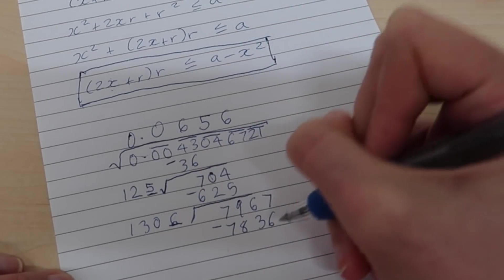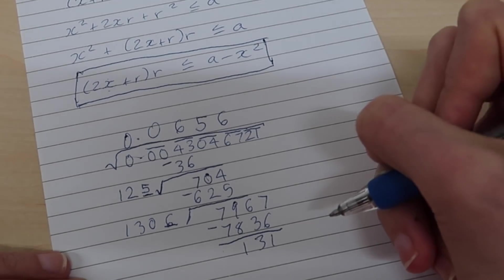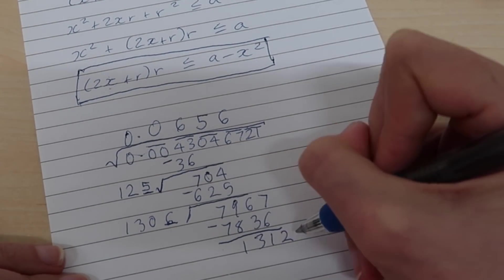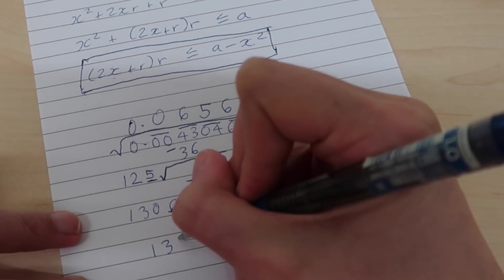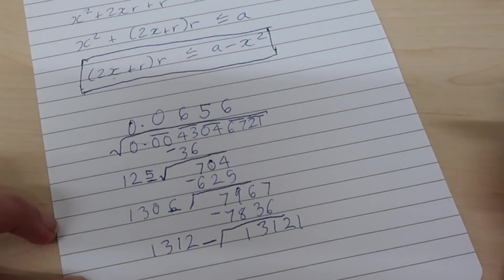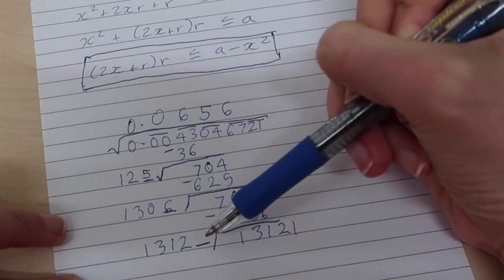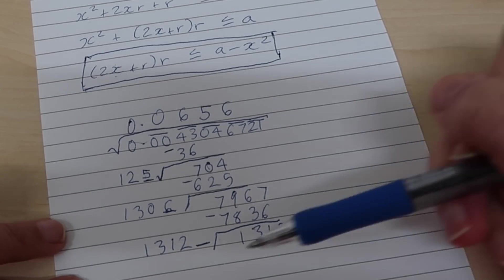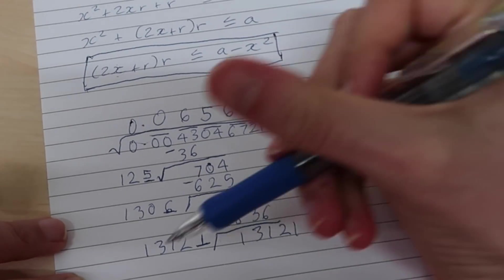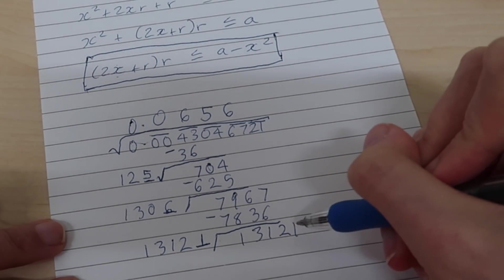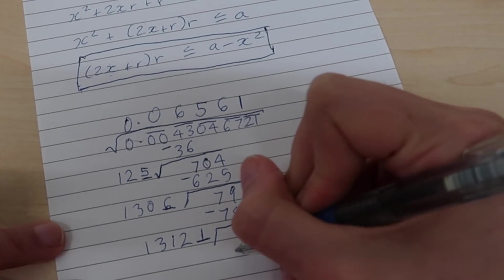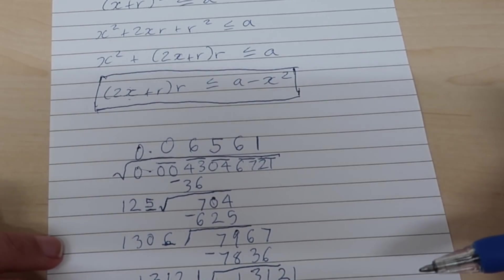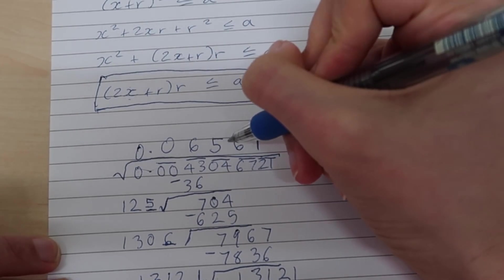And we'll record a 6 up there. Subtract these two from each other. What do we get? We get 131. Bring down our last two numbers, which are a 2 and a 1. Take this number, 656, and double it. When we do that, it's 1312. Leave a space for a digit. And then 13,120 something times something will be less than or equal to this. Well, actually, this is very close to this already. If we just had a 1 in there, 13,121 times 1 will give us this exactly. So 1 will be our last digit. And because we don't have any remainders left over here, if we were to do it like we were doing before, this would be 0. We've actually reached the end of our process. And this value here, 0.06561, is the square root of what we were trying to work out.